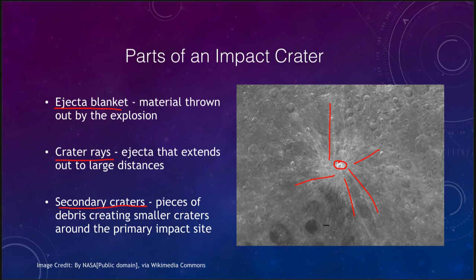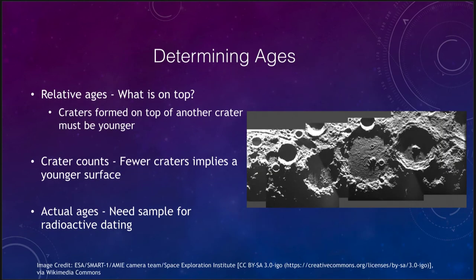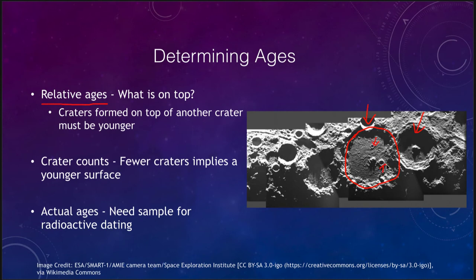Now we want to take a quick look at determining ages. How can we determine ages of craters? We use primarily relative ages — the easiest way to do this has to do with what is on top. So if you look at an old crater, perhaps this large one in the middle, we know that it is older than many of these other craters because craters like this one overlap it.